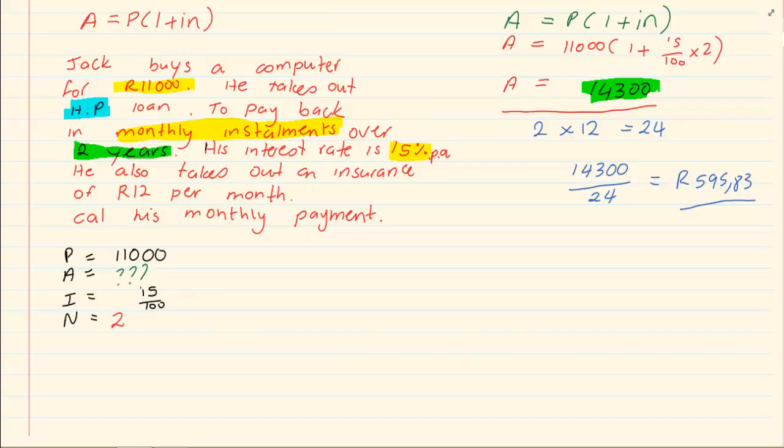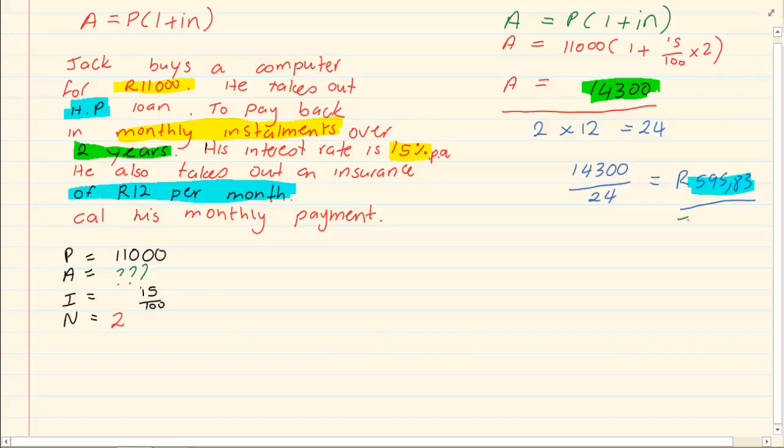But continue to read and what do they say? That per month he is going to pay an insurance of 12.30. That means his payment is not just 595.83 cents. On top of that amount he is going to pay an insurance of 12.30.